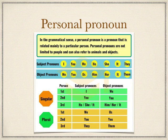Now you will study singular and plural pronouns. For singular first person: subject pronoun is I, object pronoun is me. For singular second person: both subject and object use you. For singular third person: subject pronouns are he, she, it; object pronouns are him, her, and it. For plural second person: subject and object both use you. For plural third person: subject pronoun is they, object pronoun is them. You can understand this table easily using certain rules.